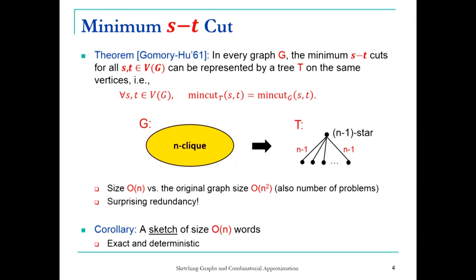Let's start with example one, minimum ST cut — the most basic problem, studied in undergrad computer science. Here's another very famous problem, compared to minimum cut and Ford-Fulkerson min-cut max-flow. This is a little bit later, from 1961, by Gomory and Hu — a seminal result that I think people don't teach as often anymore, but it's really elegant. It says that if you have a graph G and look at the minimum ST cut for all possible pairs of vertices S and T in the same graph, the graph is undirected and could have edge capacities.